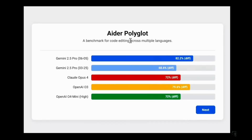Moving on to ADA Polyglot, which is a benchmark for code editing across multiple languages — very helpful for agentic coding using IDEs like Cursor or command-line interfaces. The previous Gemini 2.5 Pro scored 68.6%, which was behind OpenAI o3. But that has completely changed: the new Gemini 2.5 Pro scores 82.2% with diffs, making it a new winner. For agentic coding, Gemini 2.5 Pro looks very strong.